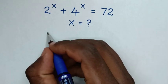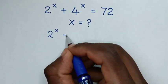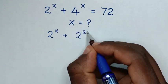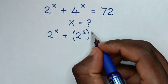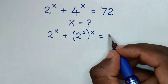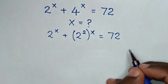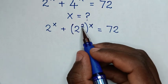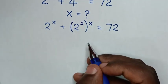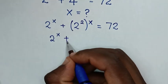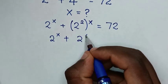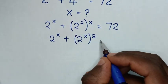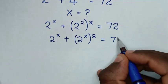So first, from our equation, 2 power x plus 4 — which is the same as 2 power 2 — then bracket power x is equal to 72. We change the powers: x inside the bracket and 2 outside the bracket, so our equation will be 2 power x plus 2 power x bracket power 2 is equal to 72.